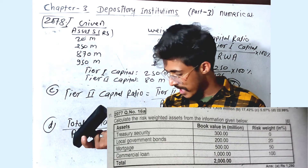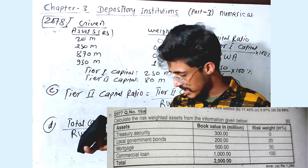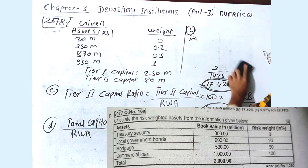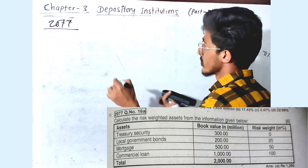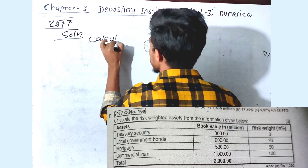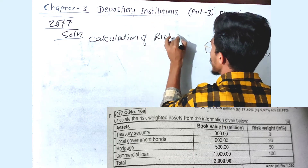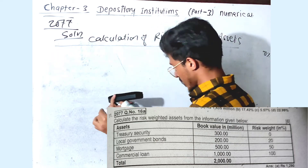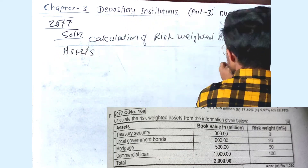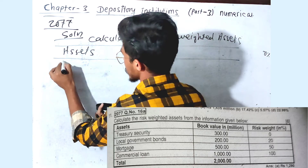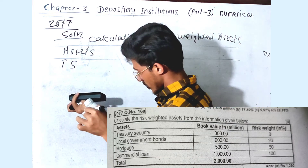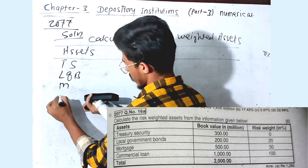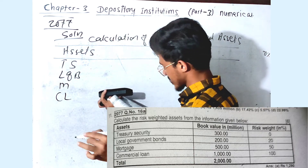Now we have a question from 2077, a 6-mark question. Calculate the risk-based assets from the following information. The solution is the calculation of risk-weighted assets. The assets listed are: Treasury securities, local government bonds, mortgages, and commercial loans — these are 4 asset types.